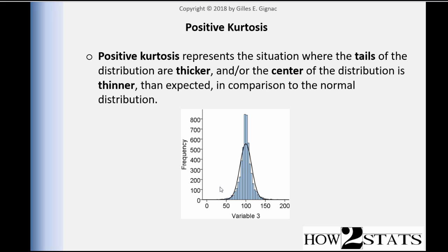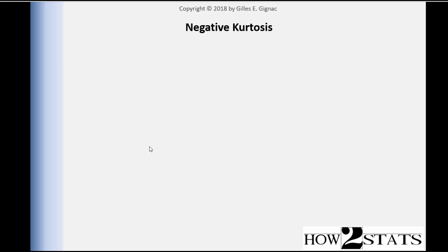Let me show you an example. We have a distribution here with a kurtosis of 3.39. The tails of the distribution are thicker than they should be on the basis of the absence of kurtosis, and the center of the distribution is thinner — it's kind of narrow, going up quite high but thinner from left to right. That's the property of a positive kurtotic distribution. Skew, on the other hand, is almost absent. There's very little skew in this distribution, but there is a lot of kurtosis. You can have a very kurtotic distribution in the total absence of any skew.